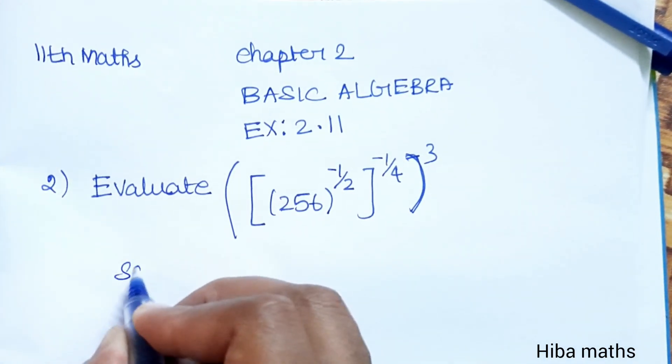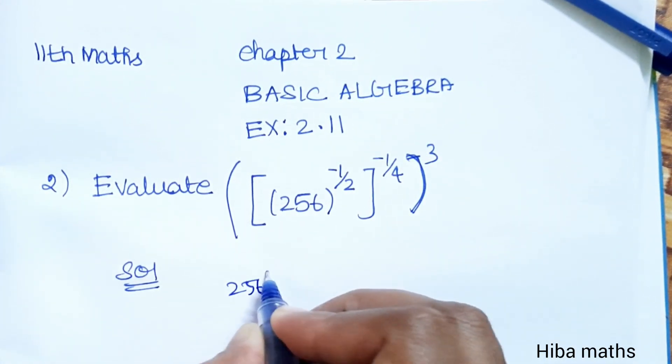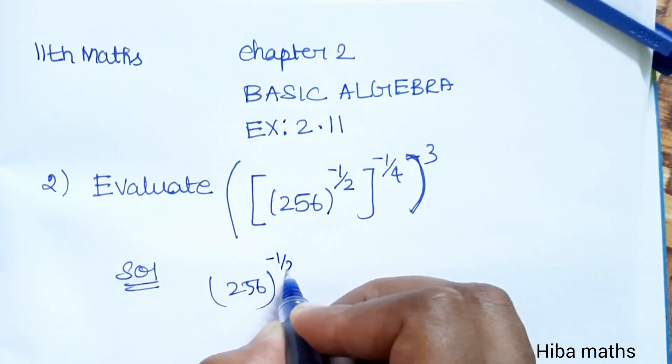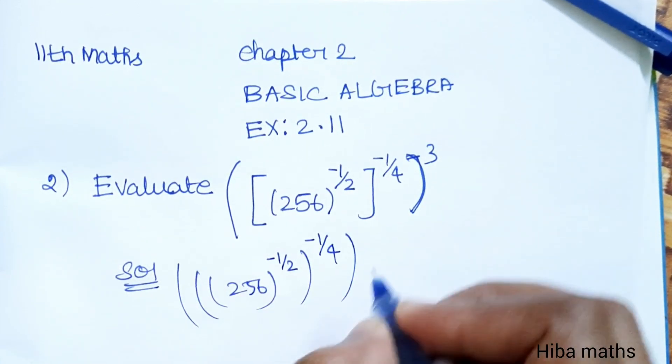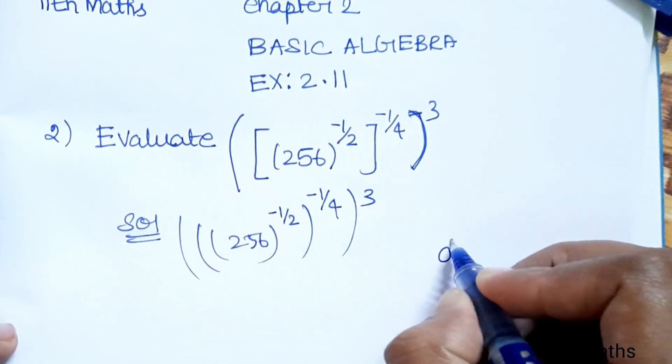We need to evaluate this. This is an easier question. 256 power minus 1 by 2, again minus 1 by 4, whole power 3.